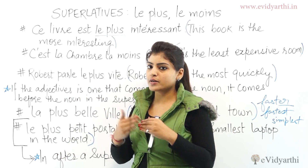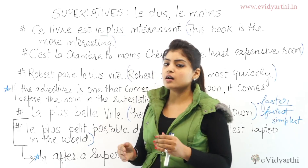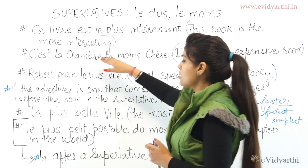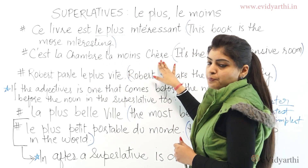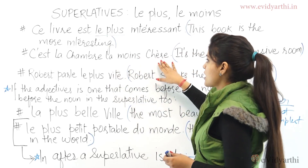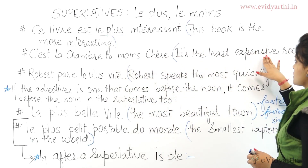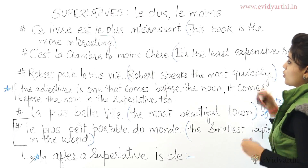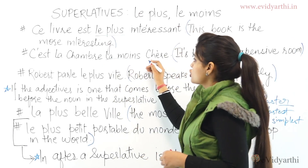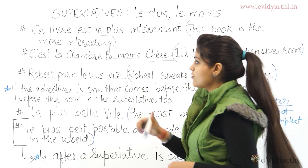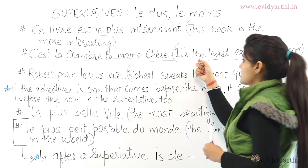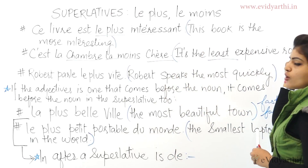Next example: 'Cette chambre est la moins chère.' This means it's the least expensive room. We use 'le moins' for 'least'. 'Chère' means expensive and 'chambre' is room. So: it's the least expensive room.